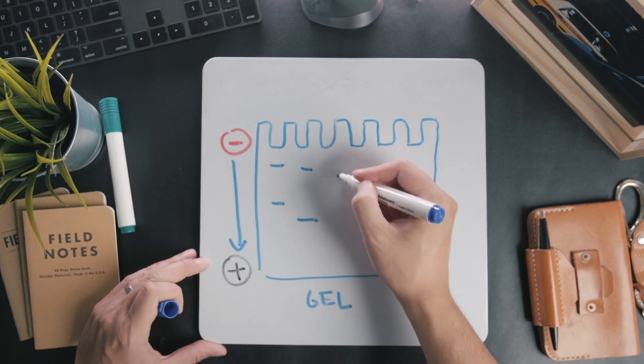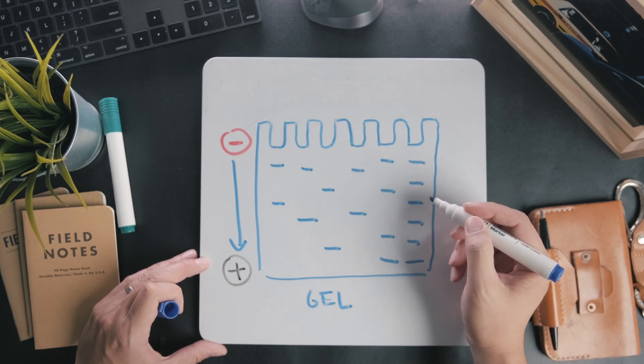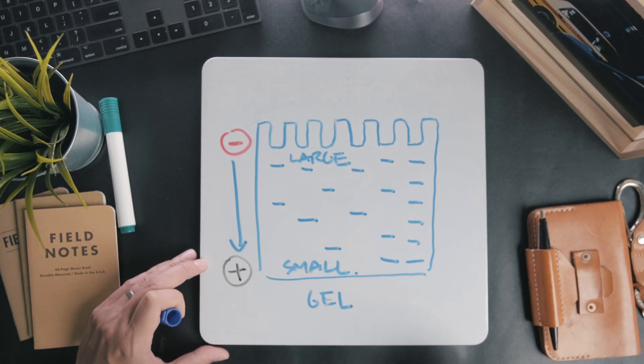As a result, after applying the current for a set period of time, you end up with a gradient of proteins with the larger ones at the top and the smaller ones at the bottom.